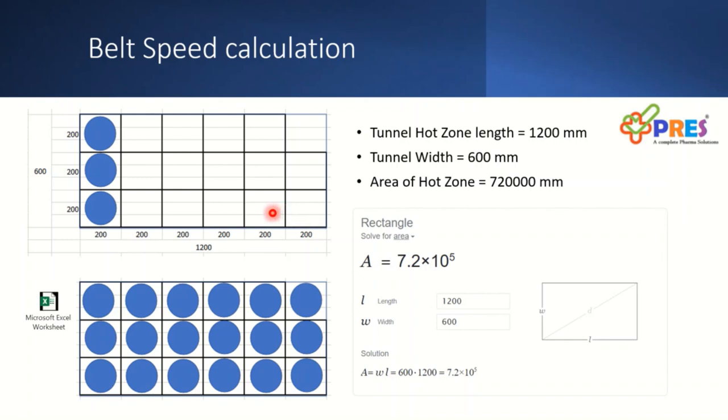I consider this is a hot zone and divided it with 6 by 3, 18 grids. I consider that total 18 vials are there in the hot zone. Tunnel hot zone length I consider is 1200mm and width 600mm, so area is 720,000mm square.